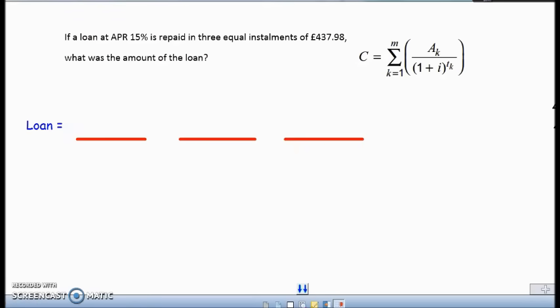So let's have a look. Here is a question. We've got a loan at APR 15%. The loan is repaid in three equal instalments of £437.98. What was the amount of the loan? And I said that C is the loan, so I've written down loan here. C equals. And what it basically says is, how many repayments are we making? So we're making three payments. And what we've got to do is, we've got to go from payment one, that's k equals one, so payment one, up to payment three, because m is three. And this big sigma sign here is actually telling us to sum them, which means add up all the payments. So you write down payment one, payment two, payment three, and then the sigma sign is just saying add them all up.